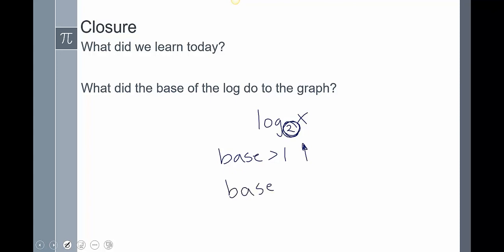Then, if your base was less than 1, but still bigger than 0, what we saw was a reflection. The whole stretching and shrinking was about the same, but we saw a reflection over the x-axis. This does conclude our lesson. If you have any other questions, please leave them in the comments.